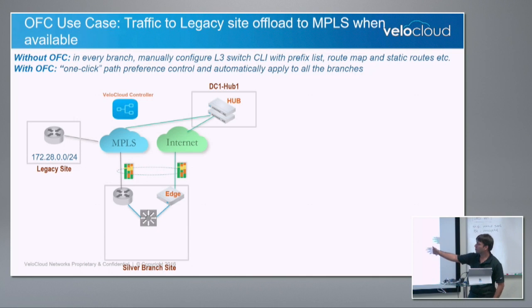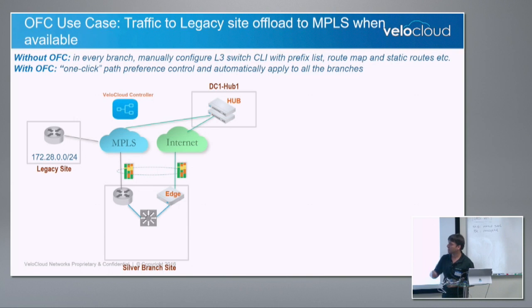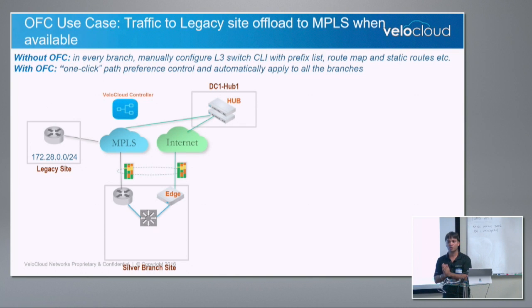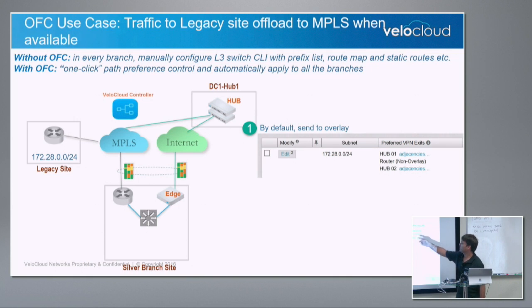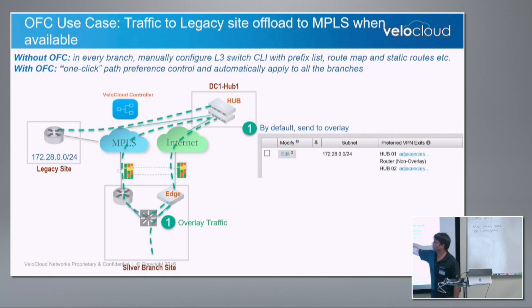We call this concept overlay flow control — a massive routing table built based on routes learned; it's the controller-based routing table showing all sites. I can pick a destination — for instance, for legacy site 172.128.0.0, I want you to send the traffic from the layer 3 switch out to the MPLS network directly. The subnet comes up here. The preferred VPN exit is the concept of where the VeloCloud intelligence and overlay ends. When hub is on top, all traffic for that legacy site destination goes from the layer 3 to the edge, takes MPLS or internet path, goes down to the hub, and from the hub down to the legacy site.